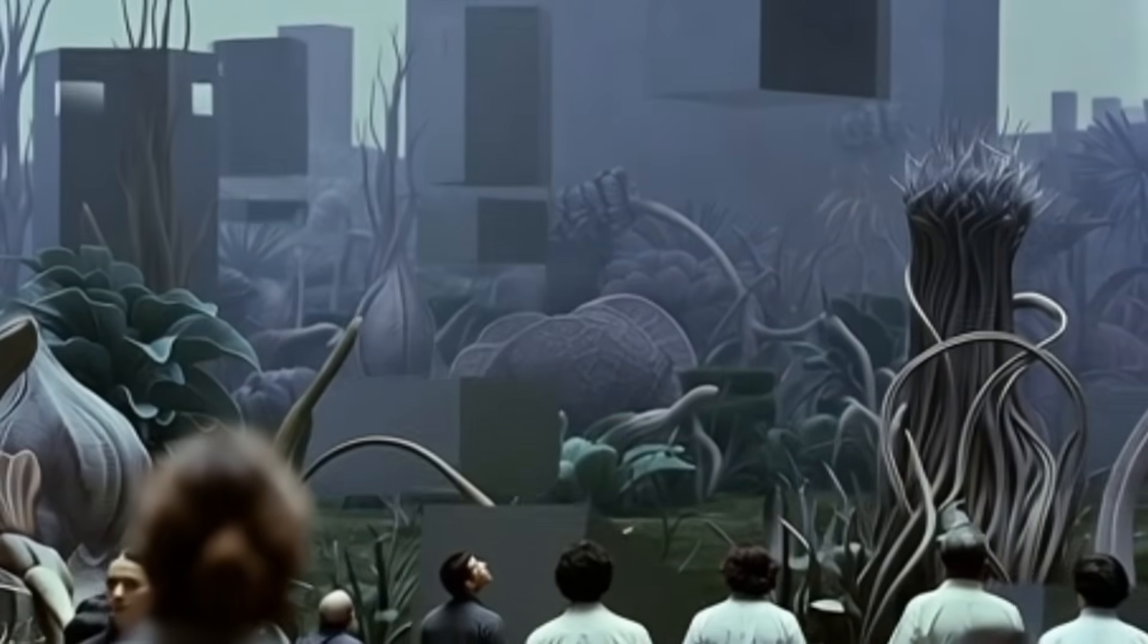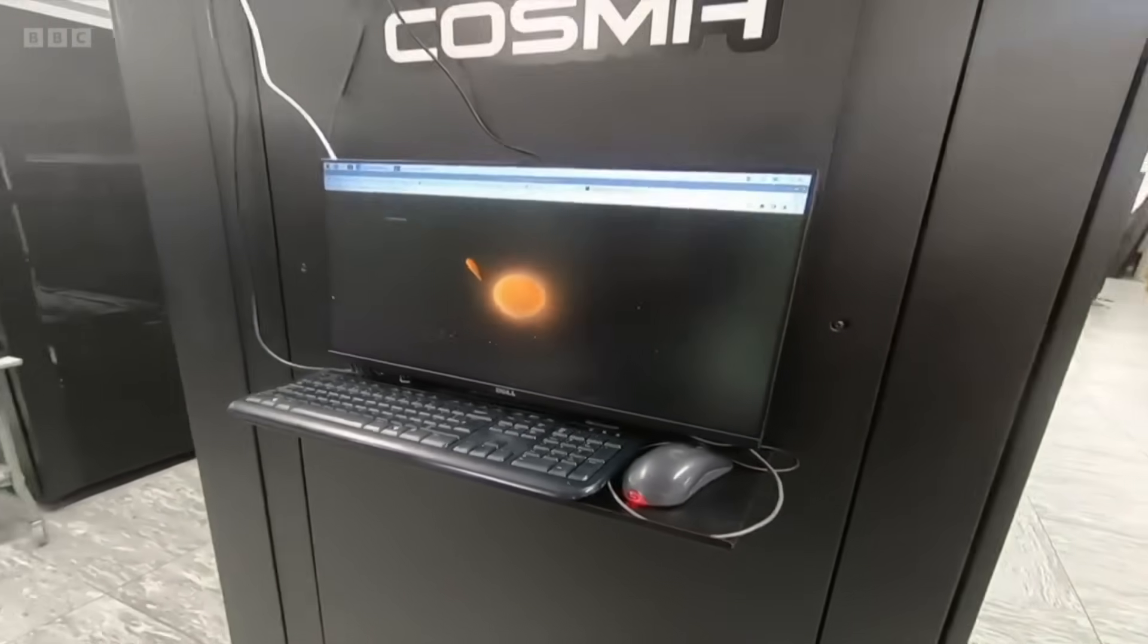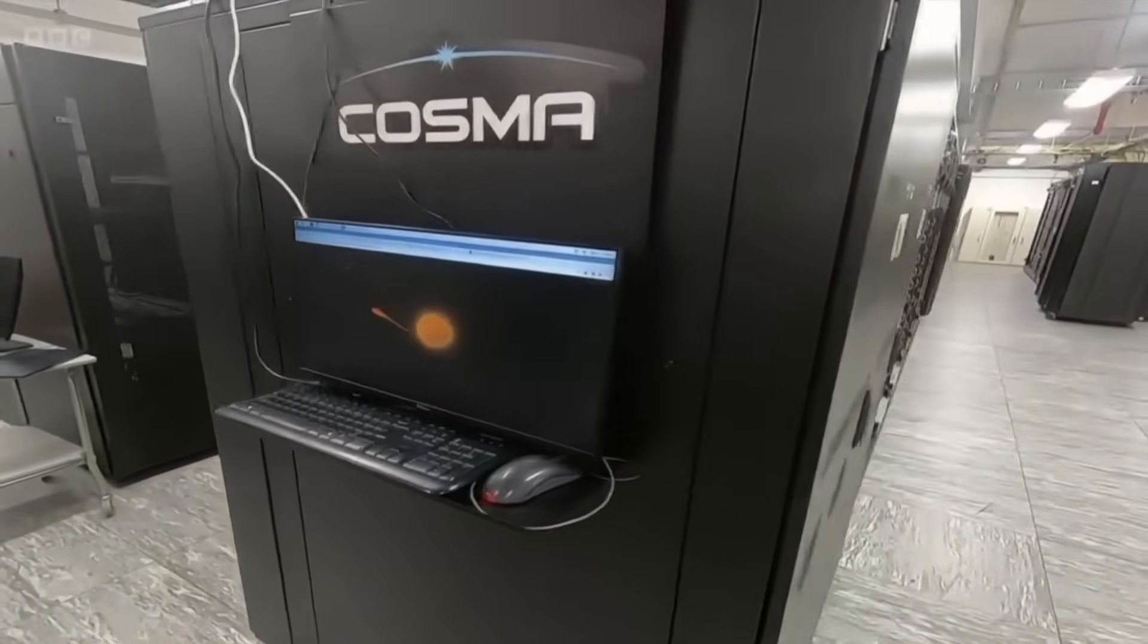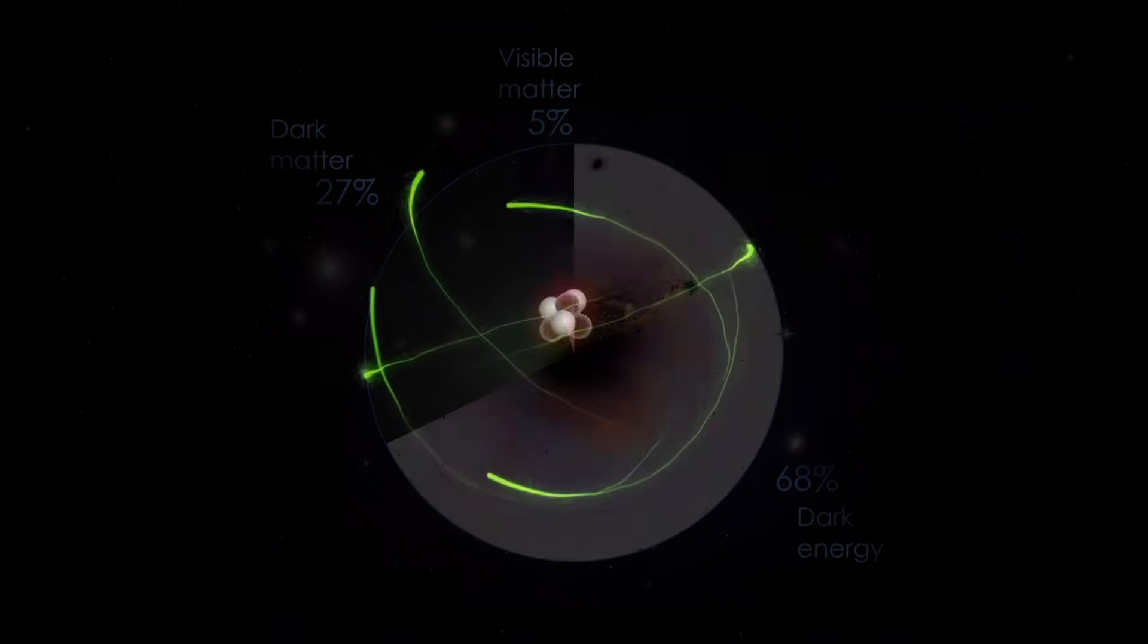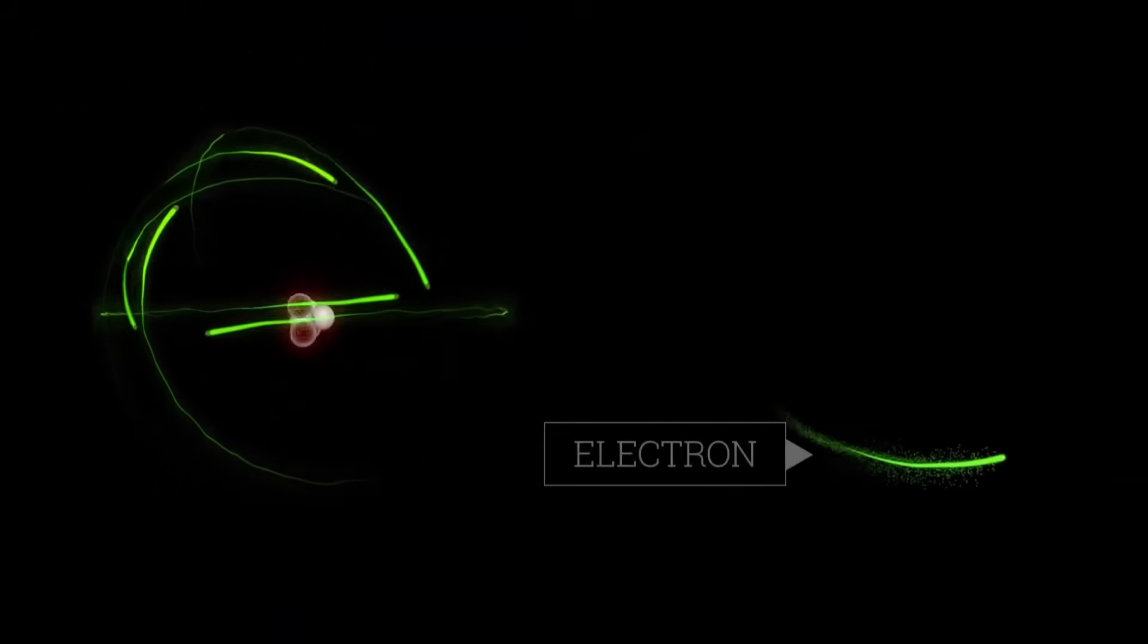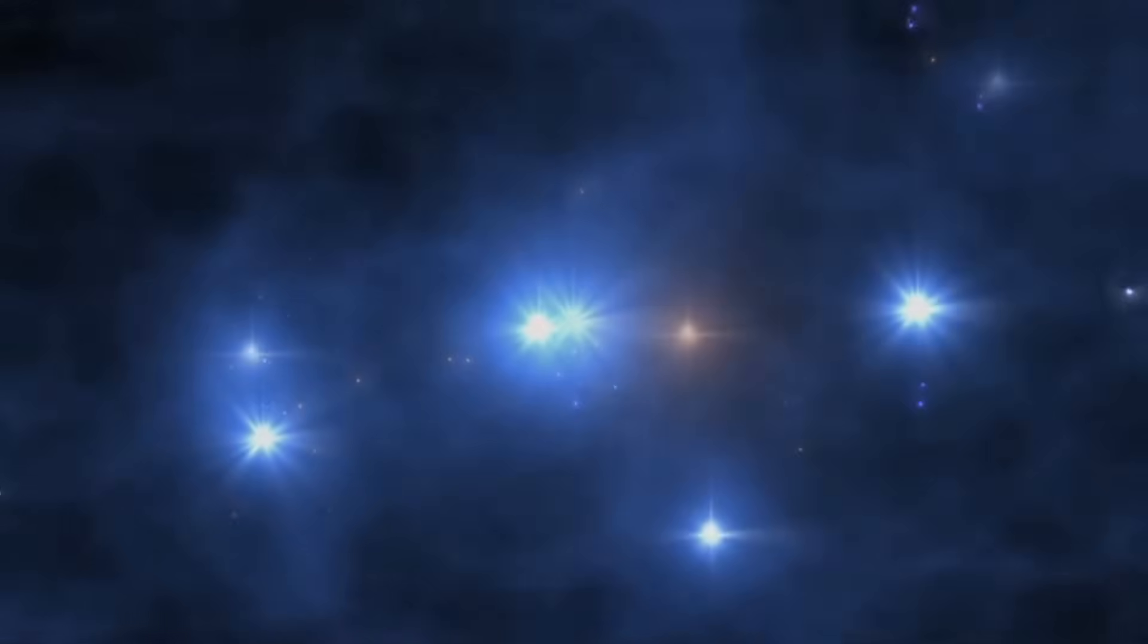A simulated universe must be perfectly algorithmic. Everything must be computable, and everything must follow fixed rules. But the real universe contains truths, events, and outcomes that no algorithm can ever compute. This means our universe cannot be a perfect computer simulation, because simulations must be fully computable, and our universe is not.